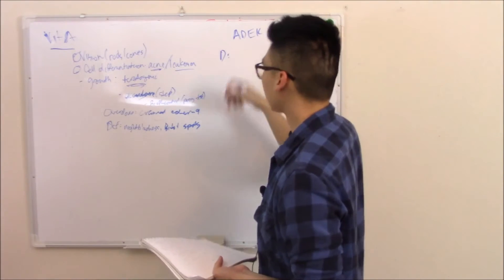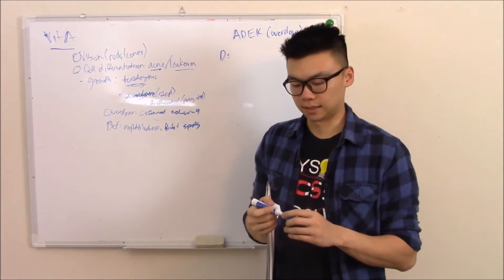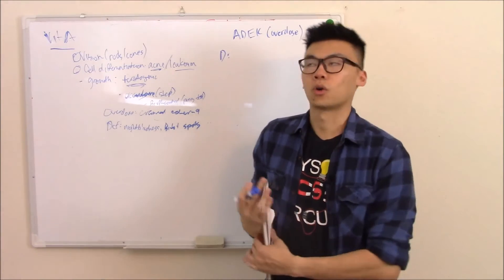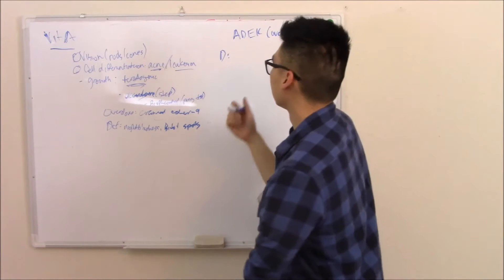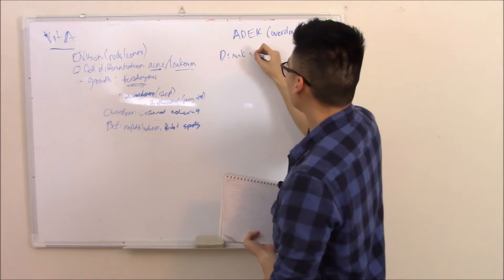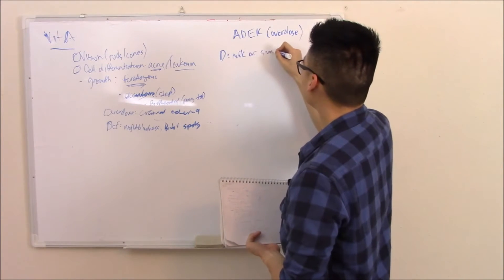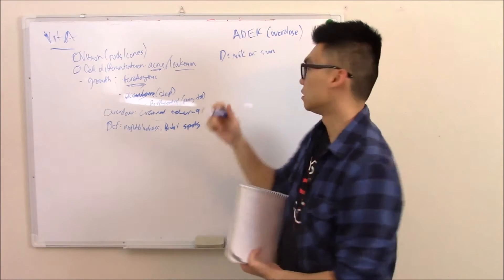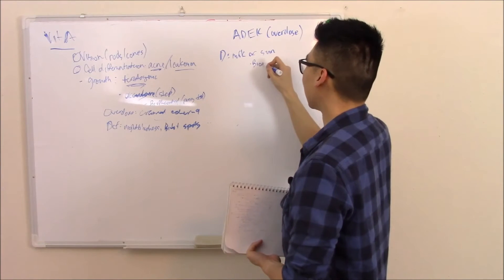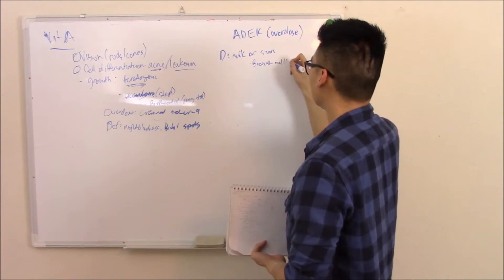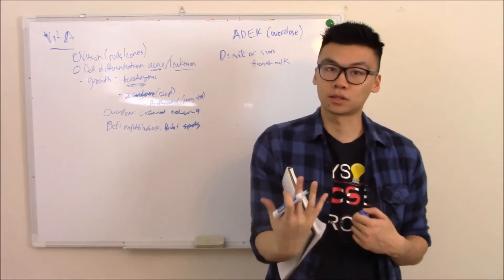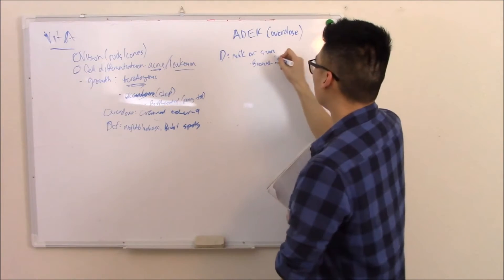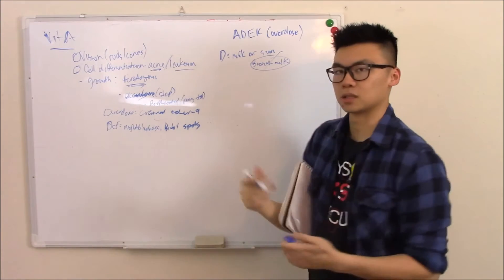Vitamin D. You probably know it as found in your milk or going outside and getting it from the sunlight. Milk or sun. Where it isn't found is in breast milk and that is important for you to know. It's important for you to educate mothers to know. It's not found in your breast milk.